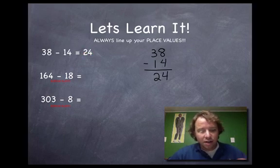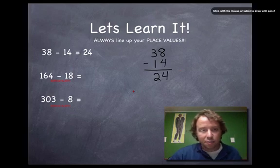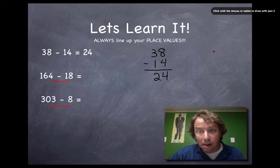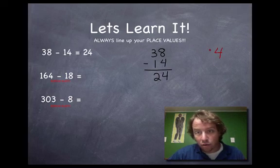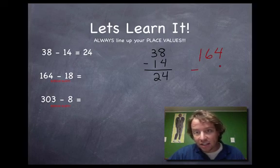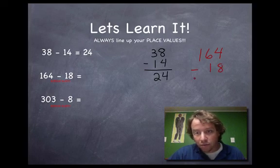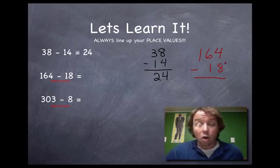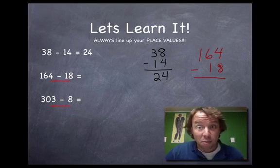So 38 minus 14 equals 24. Let's move on to the second problem. I'll line it up the same way: 164 has the ones place, tens place, and hundreds place. We take away 18 — the 8 in the ones place lines up with the 4, and the 1 in the tens place lines up nicely. Now here's the hard part — pay attention, this is how you borrow.